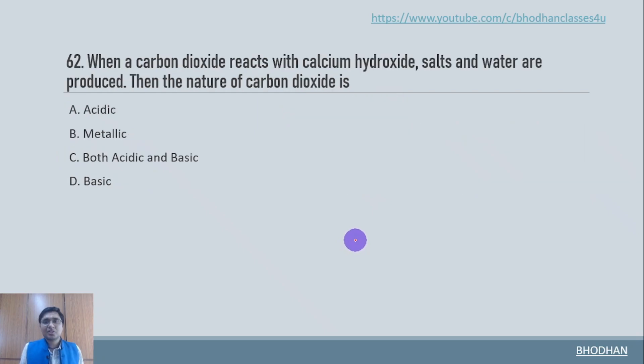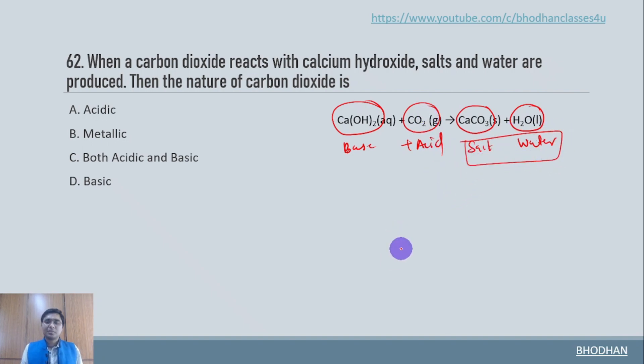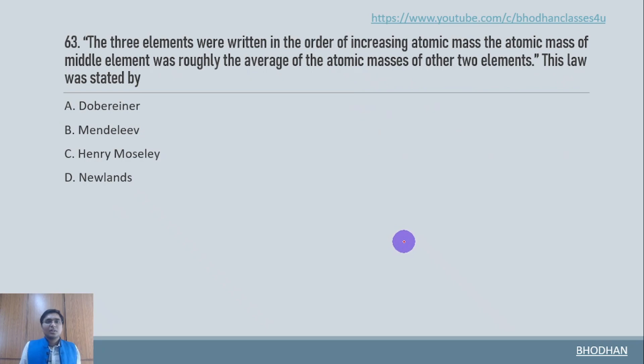When carbon dioxide reacts with calcium hydroxide, salts and water are produced. Now what is the nature of the carbon dioxide. So as you all know in case of neutralization reaction we will get salt and water when acid and base react together. So calcium hydroxide is basically basic in nature. And calcium carbonate is salt and H2O is water. So now this CO2 has to be acidic in nature so that we get salt and water. Which means CO2 is acidic in nature. And here is the statement.